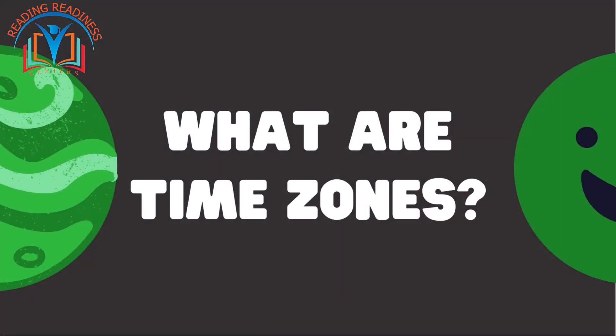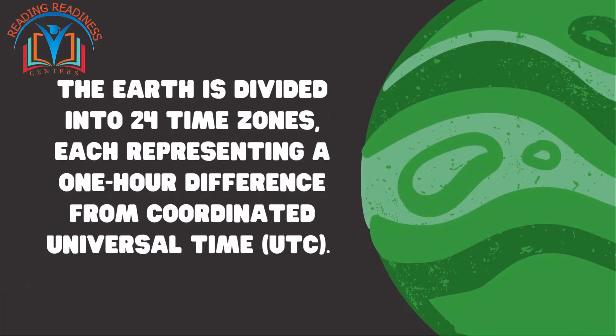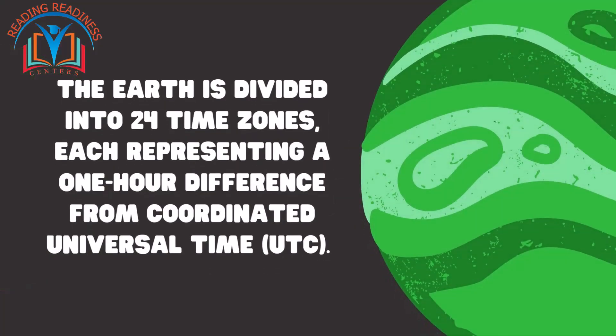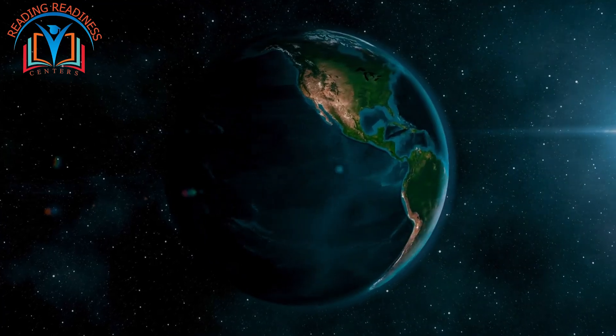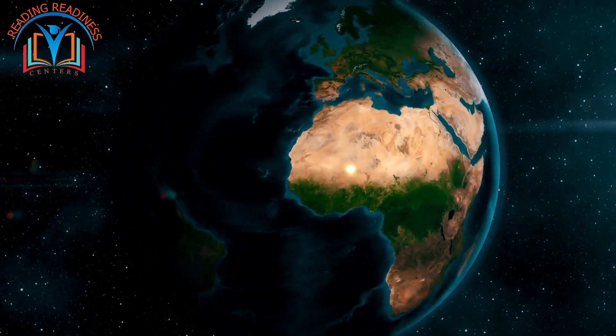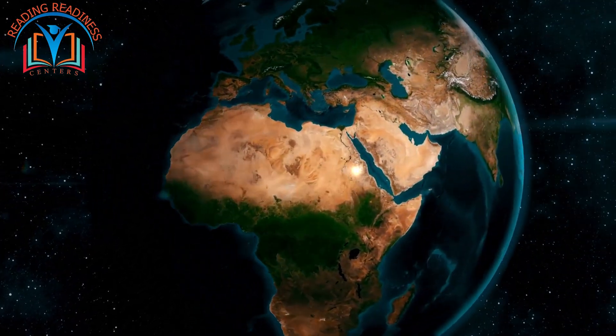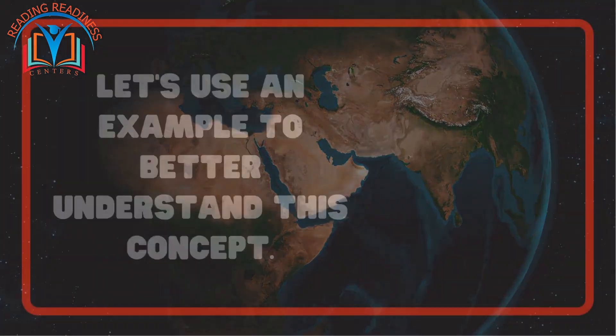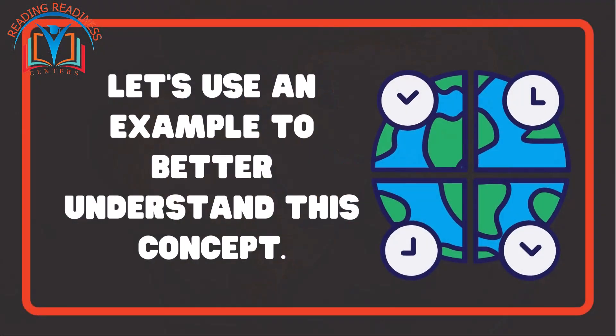What are time zones? The earth is divided into 24 time zones, each representing a one hour difference from Coordinated Universal Time, UTC. This means that as you move east or west across the globe, the time will change accordingly. Let's use an example to better understand this concept.